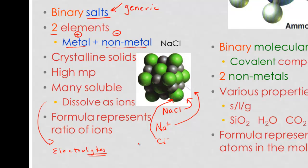Now one of the other important things is that the formula represents only a ratio of ions. It does not represent a specific NaCl discrete molecule. It just tells you that in this crystal we have a one to one ratio of sodium and chloride.